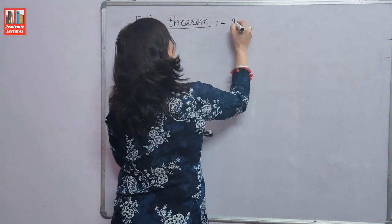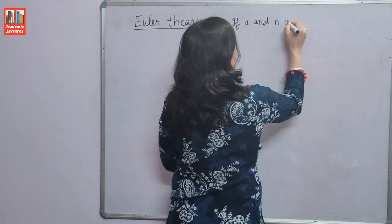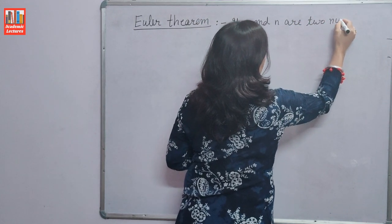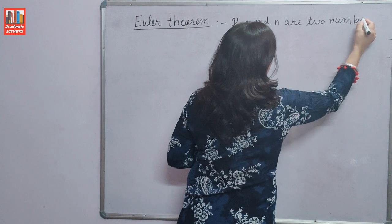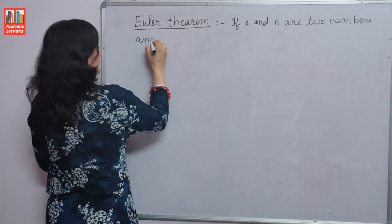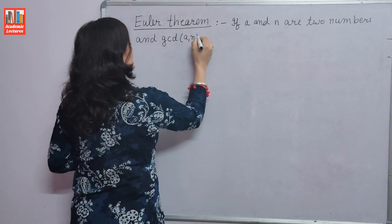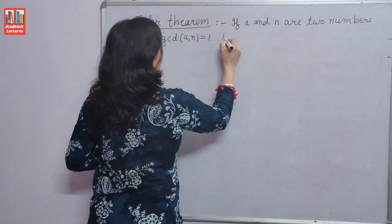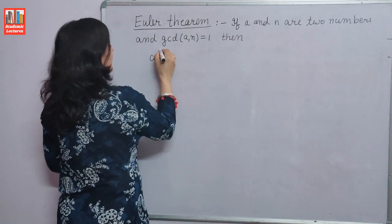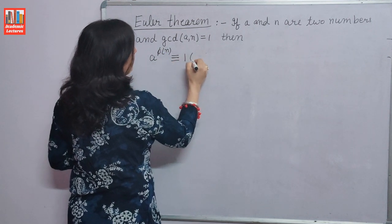If A and N are two numbers and GCD of A and N is equal to 1, then A raised to the power phi(N) is congruent to 1 modulo N.